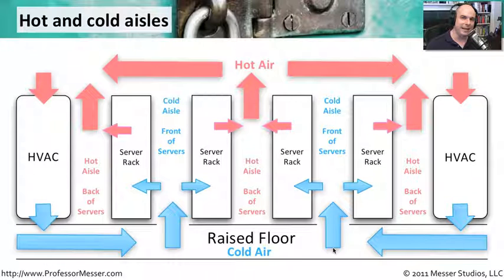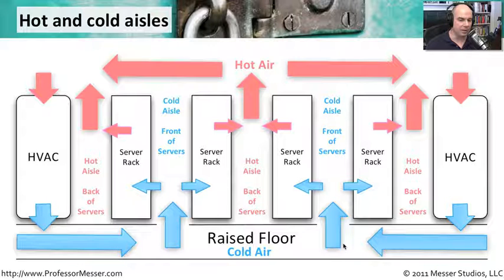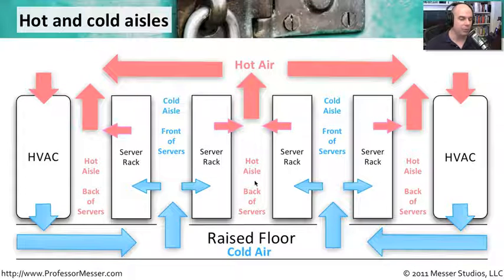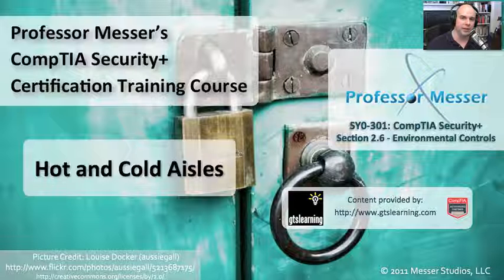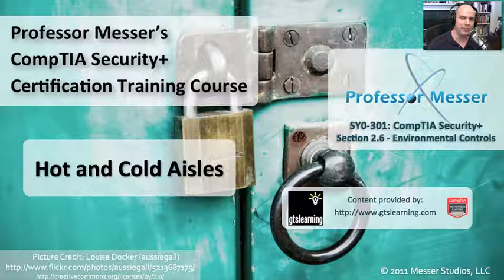When we design this to be as optimal as possible, we'll have certain aisles that are our cold aisles, where we're pulling all the air through. Then we have our hot aisles, where all of the air has gone through our computer systems, been heated up, and is sent to the top of the building where we can recirculate it and make it cold again.